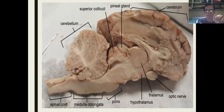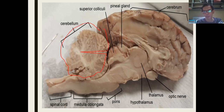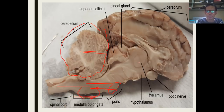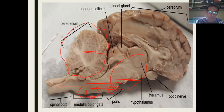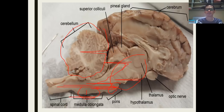Let's locate the parts. The cerebellum is this part here. The pons is here, and the medulla oblongata is here. The midbrain is this one. If we connect the midbrain, pons, and medulla together, that forms what is called the brain stem.